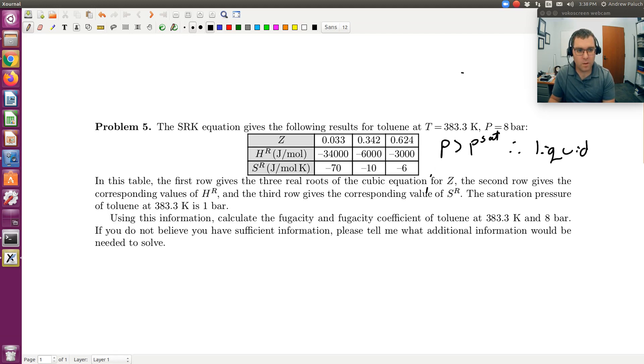If I have a liquid, that means I'm going to want to choose my smallest Z. So that means I'm looking at this column. Liquid, I'm going to choose the smallest Z, so I'm looking at this column here.